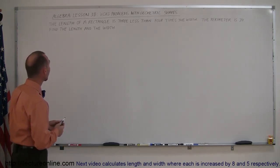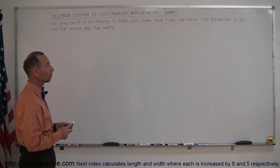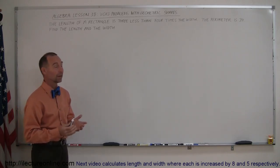And the problem we have here is the length of a rectangle is 3 less than 4 times the width. The perimeter is 34. Find the length and the width.